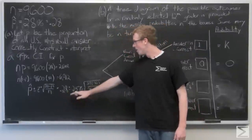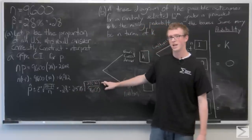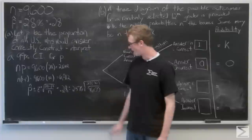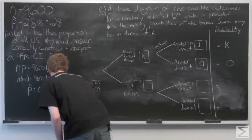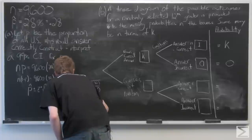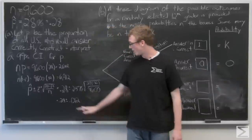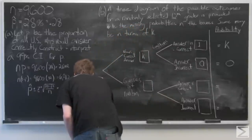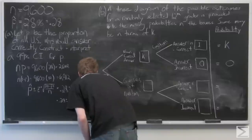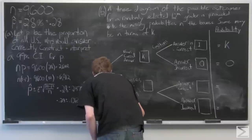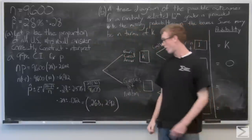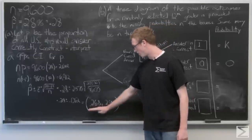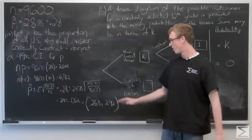The confidence interval is 0.28 plus or minus 2.576 times the square root of (0.28 times 0.72) all over 9600. Using a calculator, this works out to 0.28 plus or minus 0.012. So the lower bound is 0.268 and the upper bound is 0.292. We can say with 99% confidence that the proportion of all U.S. students who would answer the question correctly is between 0.268 and 0.292, or between 26.8% and 29.2%.